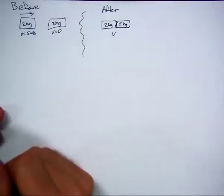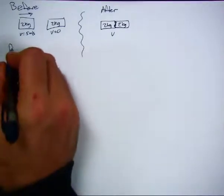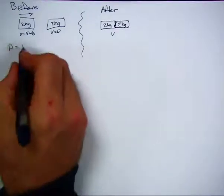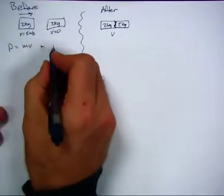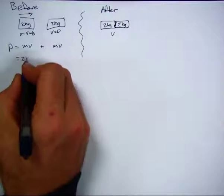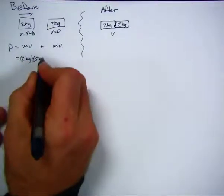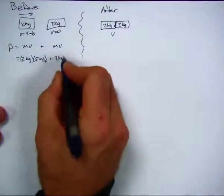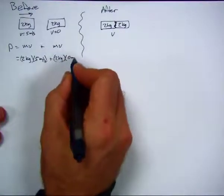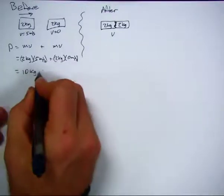We can use conservation of momentum to help us calculate that. Our general procedure: write down the total momentum before the collision. Momentum is mass times velocity plus mass times velocity for the second cart. So we get 2 kilograms times 5 meters per second plus 2 kilograms times 0 meters per second.